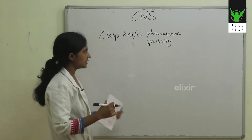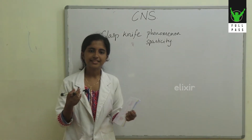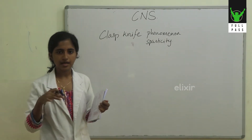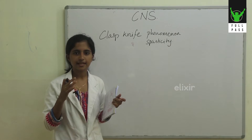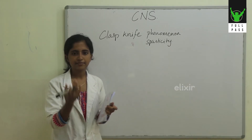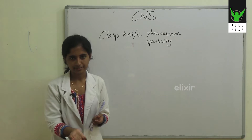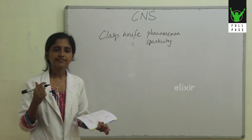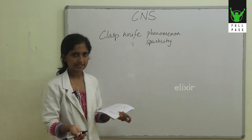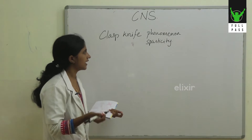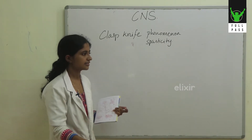Spasticity and rigidity occur when muscles are hypertonic — that is, in pyramidal tract lesions or extrapyramidal tract lesions. Usually we get spasticity in pyramidal tract lesions and rigidity in extrapyramidal tract lesions.